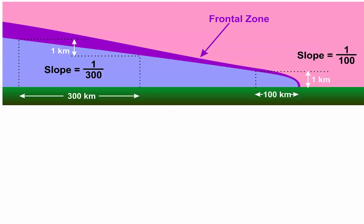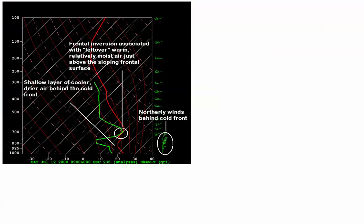In this particular case, let's look at the frontal inversion on the 9Z model sounding at Grand Island, Nebraska. First, we'll note that there's a shallow layer of cool, relatively dry air just above the surface that was filtering south on northerly winds, which you can see on the right of the sounding. Around 700 millibars, you can see the frontal inversion, and that's associated with the leftover warm, relatively moist air that's just above the sloping frontal surface.